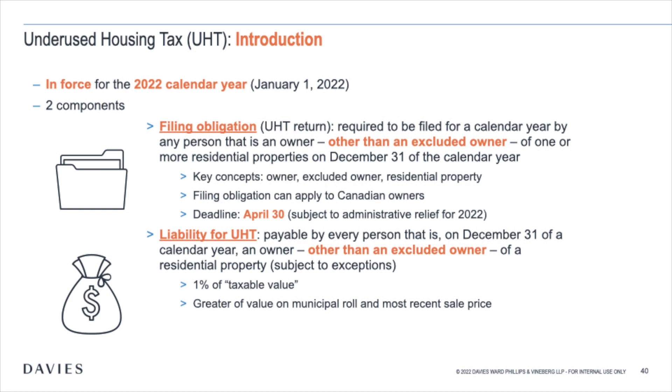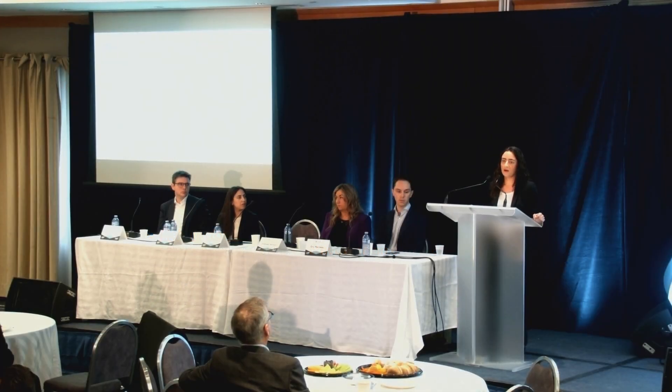The second component is the tax liability. The UHT is payable by an owner other than an excluded owner unless an exception applies. The tax is 1% of the taxable value, defined as the greater of the municipal assessment value and the most recent sale price in the calendar year. The excluded owner concept is very important — an excluded owner has no obligations whatsoever under the legislation, no filing obligation and no tax liability. The key concepts are: owner, excluded owner, and residential property.